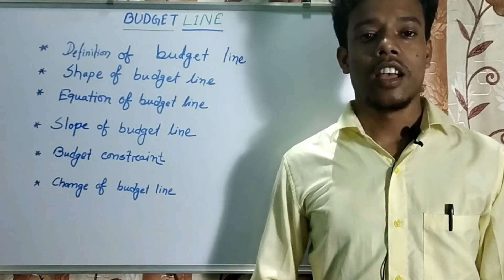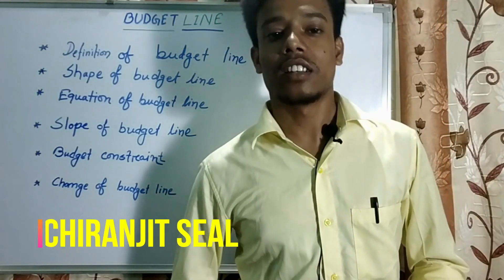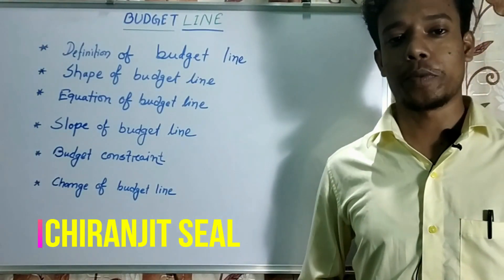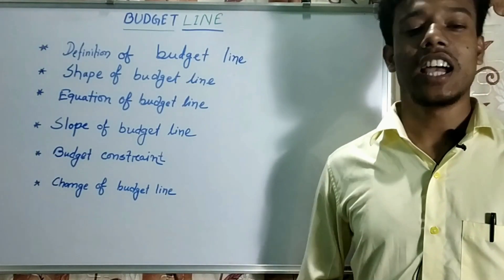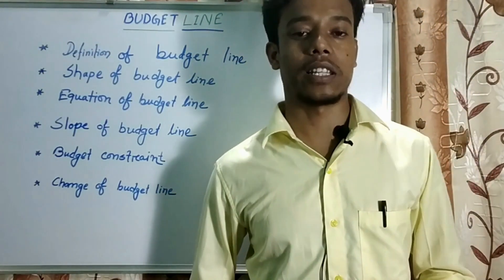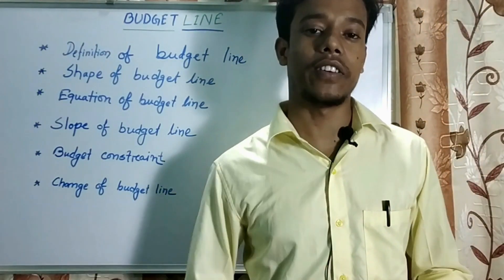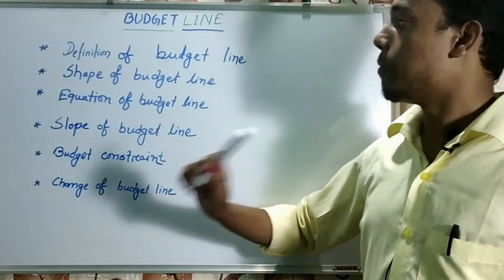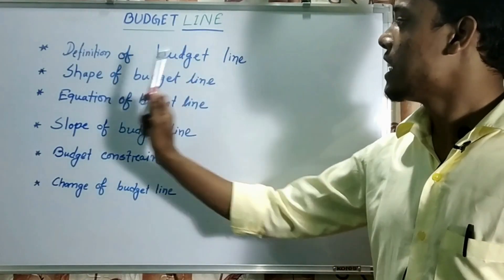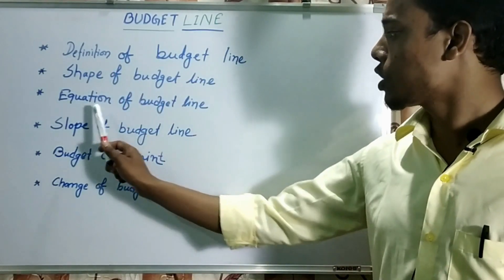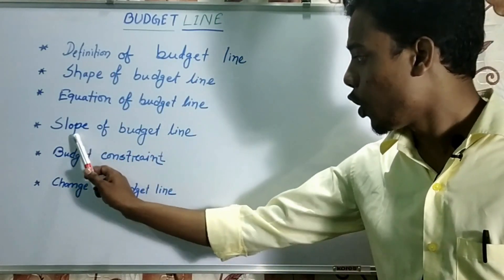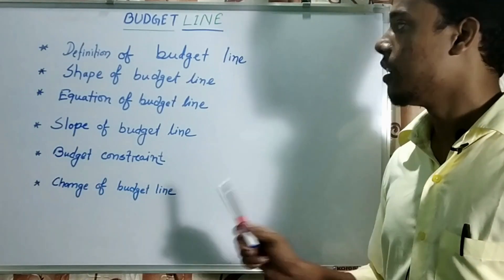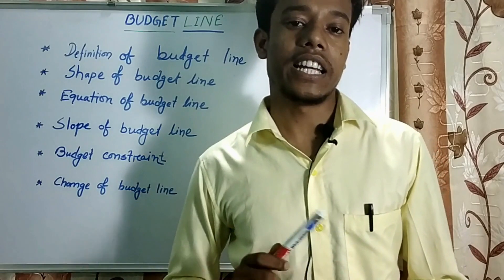Hello guys, welcome back to DG Classes. Today we are going to discuss an important topic of microeconomics — the budget line — which is related to the previous concept of indifference curve. The link is given in the description box. We are going to discuss the definition of budget line, shape of budget line, equation of budget line, slope of budget line, budget constraint, and change of budget line.